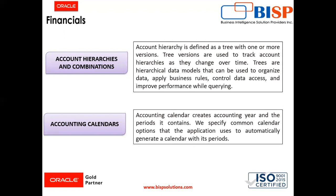Then comes the accounting calendar. An accounting calendar is created in the system to create the accounting year and the periods it contains. We specify common calendar options that the application uses to automatically generate a calendar with its periods. We can maintain calendars in Fusion applications with many period frequencies — these can be monthly, weekly, quarterly, or yearly. When we select this frequency, our calendar will be automatically generated and we will not need to create the calendar manually.